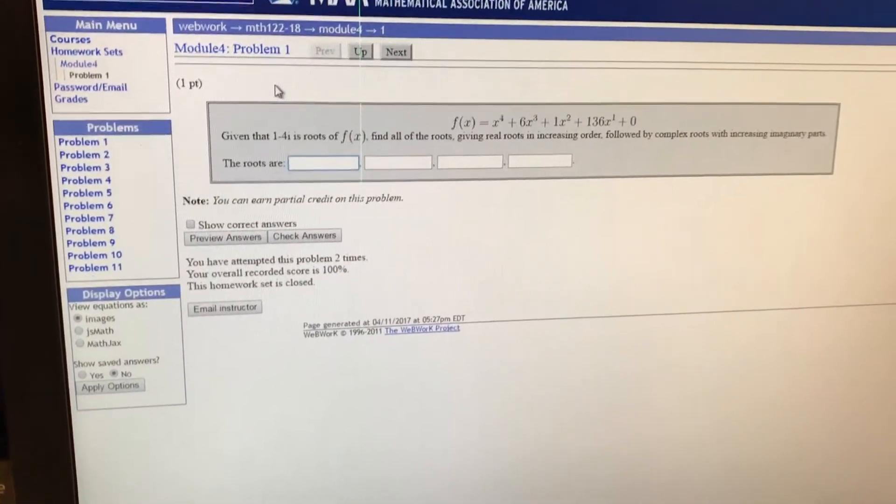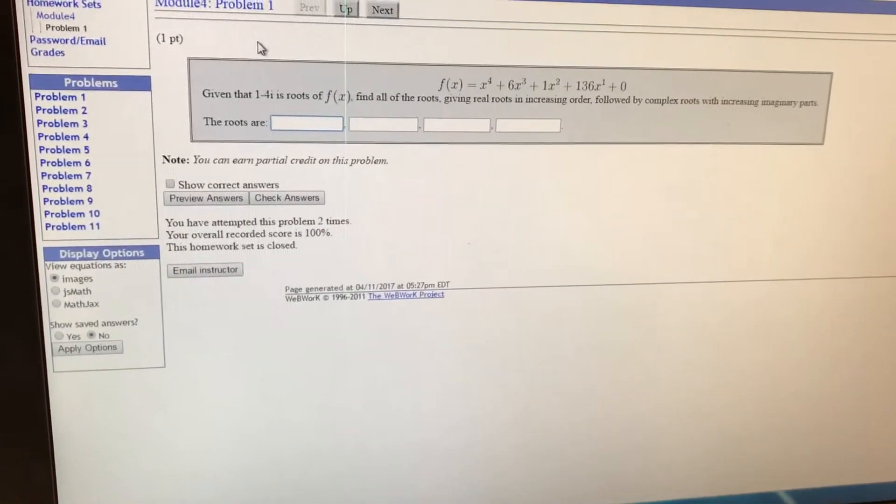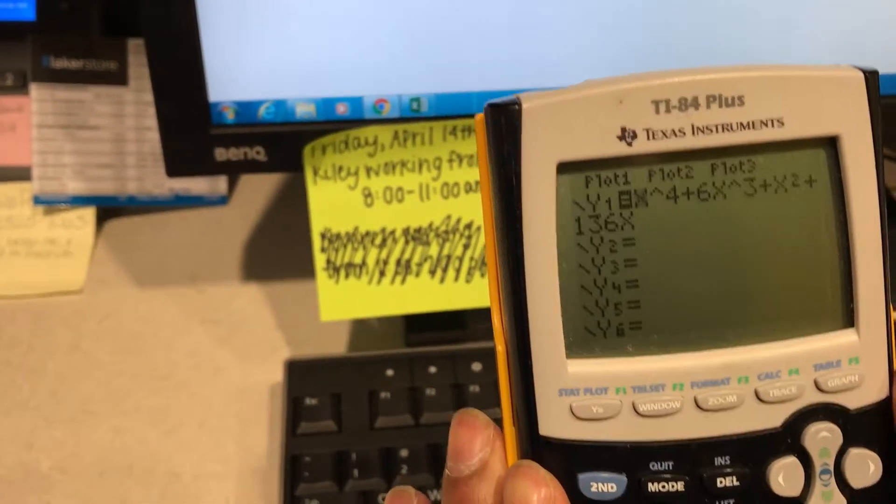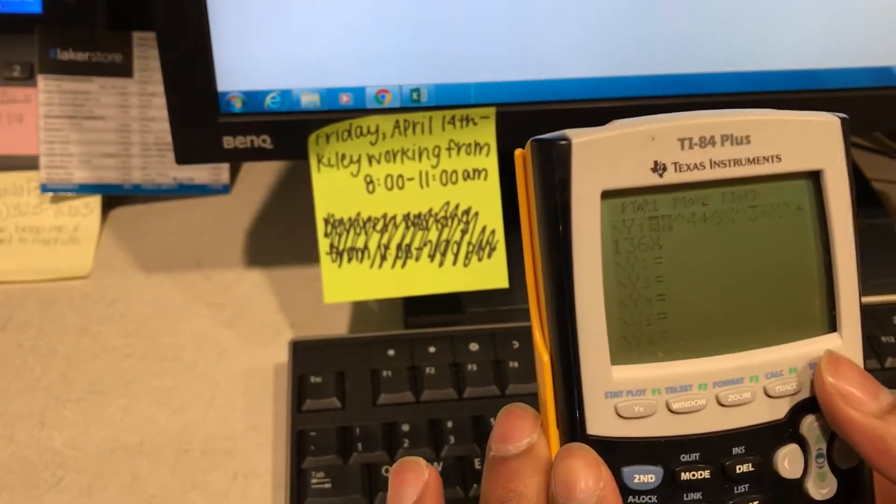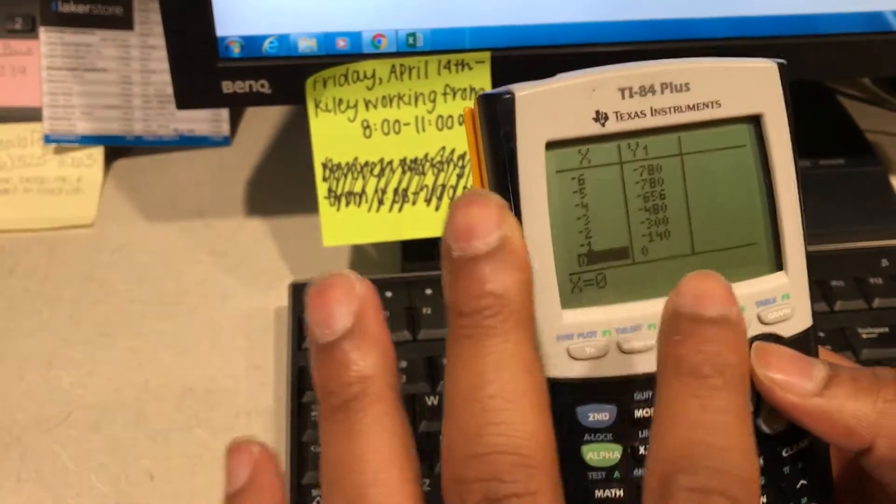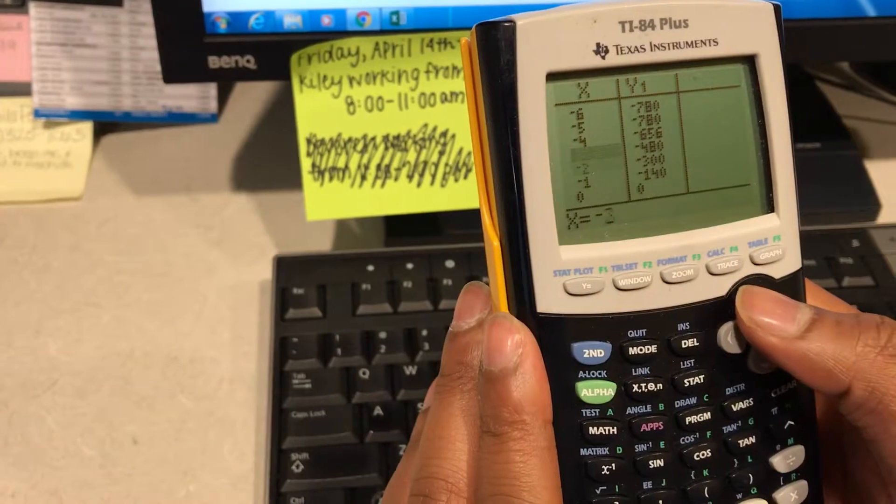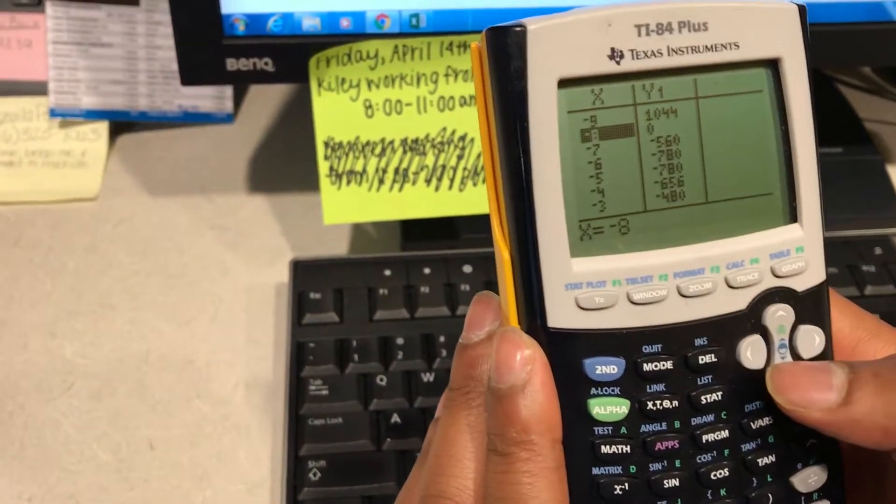So all we have to do is find 2 more. To make it easier for us, we're just going to plug the equation in the calculator, as I've done here. And then what I do to make it easier, I just go to the table and I see where the y coordinate is 0. So y is 0 when x is 0, and it's also 0 when negative 8 equals 0.